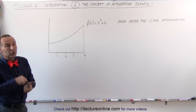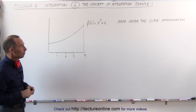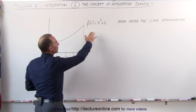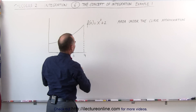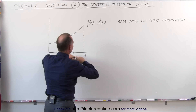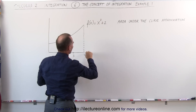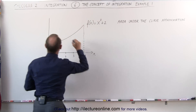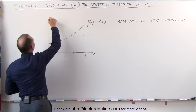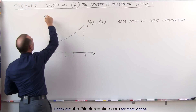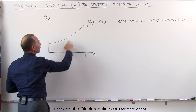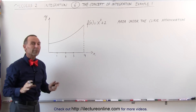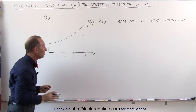To illustrate that we're going to do an example. Here's the function f(x) = x² + 2. We have the horizontal axis x and the vertical axis y. We're trying to find the area underneath this curve and we're going to do it by approximation.